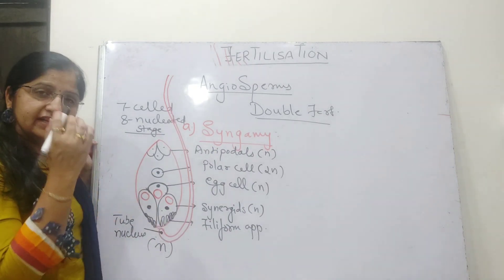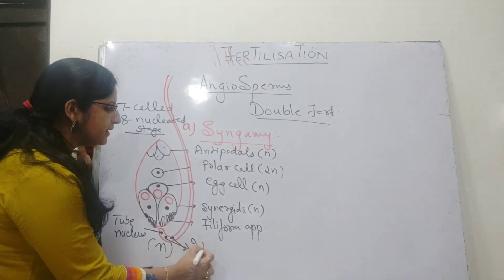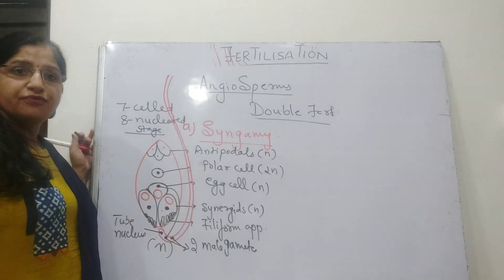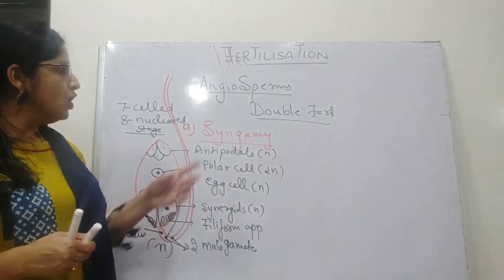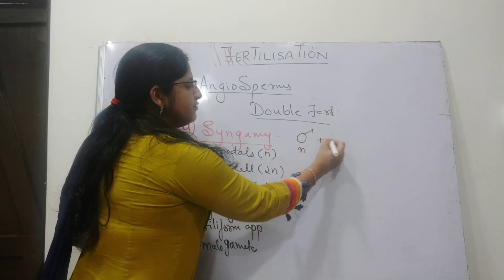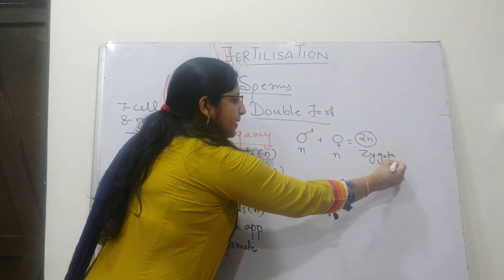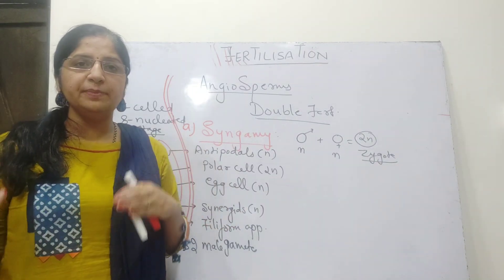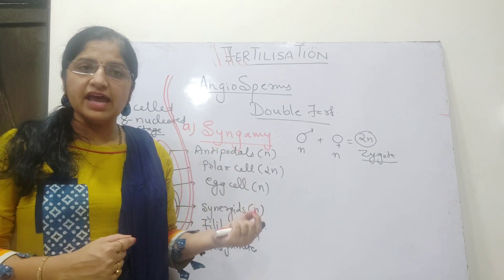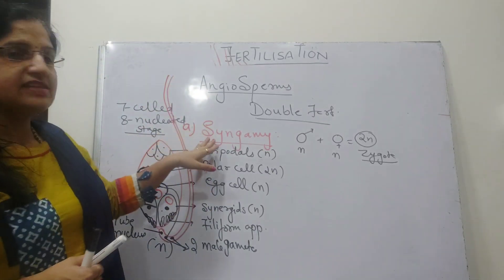A stimulus follows and the second synergid also degenerates. As both synergids degenerate, the two haploid male gametes present behind are released. One haploid male gamete fuses with the nucleus of the female gamete — the egg cell. This process is called syngamy. Syngamy is the fusion of the male gamete with the female gamete to form a diploid cell called the zygote — the fusion of two haploid gametes, one male and one female, to form the first diploid cell of new life. This zygote in the future becomes the embryo, starting new plant life.